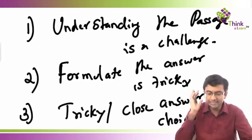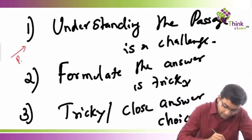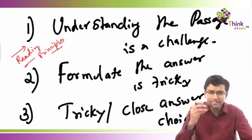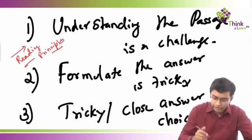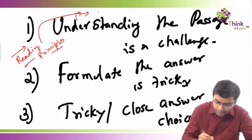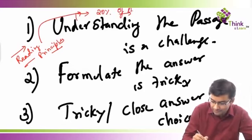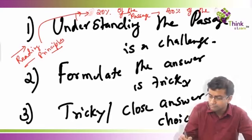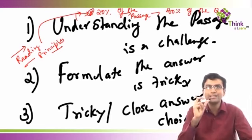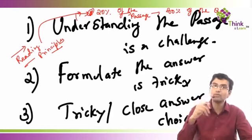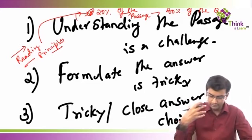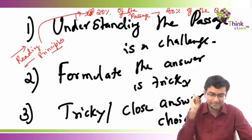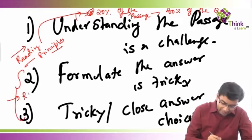Understanding the passage is a challenge, and that is why we have the reading principles class. The reading principles class helps you understand the passage and figure out what is really important when answering questions. The objective was to pick up 20% of the passage which will help us answer 80% of the questions. Now that we know this 20% will help answer 80% of questions, we need to formulate the answer and figure out how to pick the right answer choice when stuck between two. That is what my RC rules class achieves.